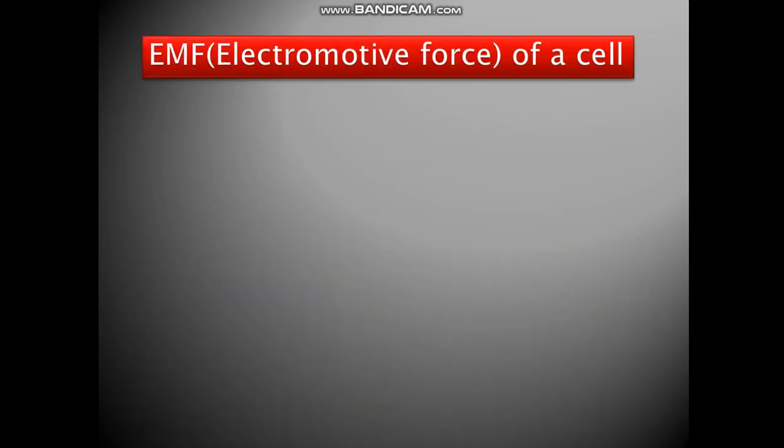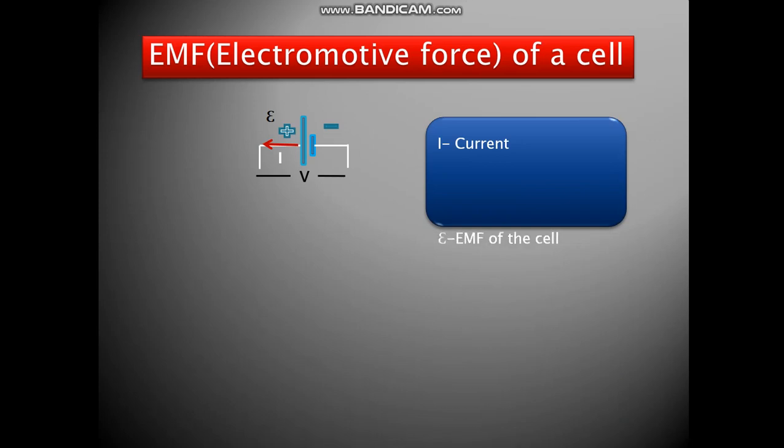Let us talk about the electromotive force of a cell, the EMF. So we have a cell here, and this EMF is E, or epsilon. We have the potential difference V, current I. So we have I as current, E as the EMF of the cell, V the potential difference.